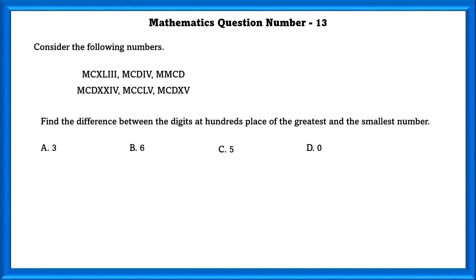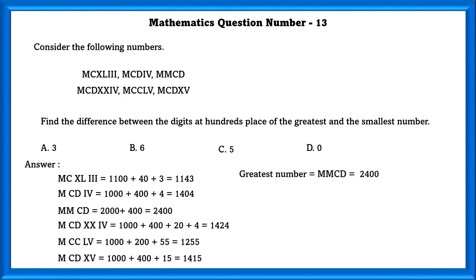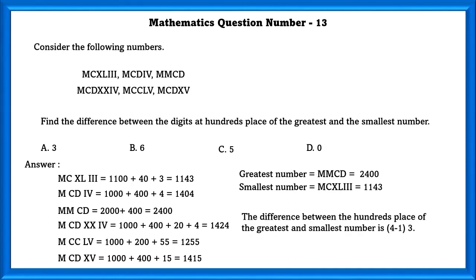Mathematics question number 13. Consider the following numbers. Find the difference between the digit at hundredths place and the greatest and smallest number. First, we will find all the Roman numerals in Arabic numerals. Now, the greatest number is MMCD, which is equal to 2400. And the smallest number is MCXLIII, which is equal to 1143. The difference between the hundredths place of the greatest and smallest number is 3.